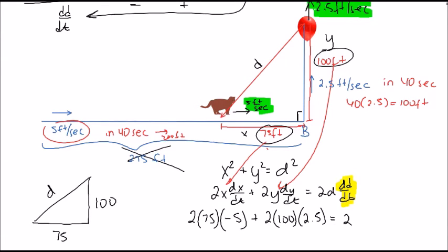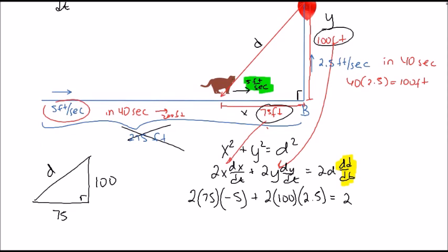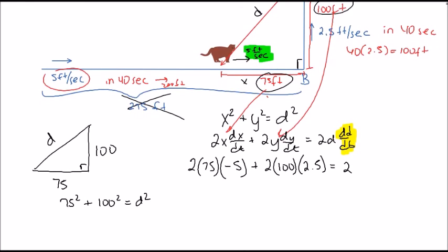We don't have d at this moment, but we are interested in this exact instance when this is 75 and this is 100. We can compute d using the Pythagorean theorem. We can solve this pretty easily: this is 125. You may also recognize that this is a 3-4-5 triangle: 3 times 25, 4 times 25, so d is 5 times 25.